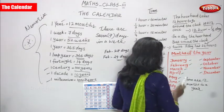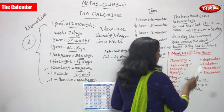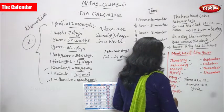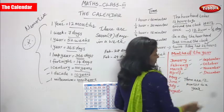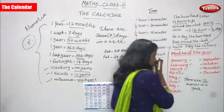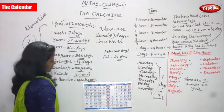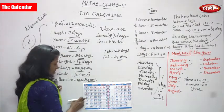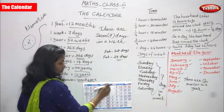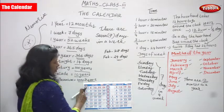Now look at this — this is a calendar. What is the month shown? May month. What is the next month after May? June. How many days does May month have? That is 31 days.